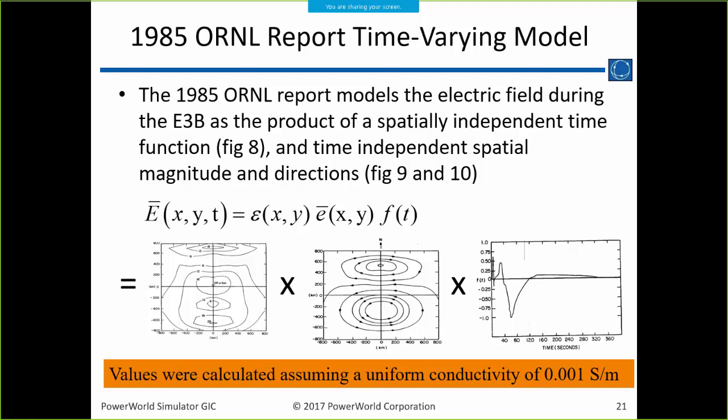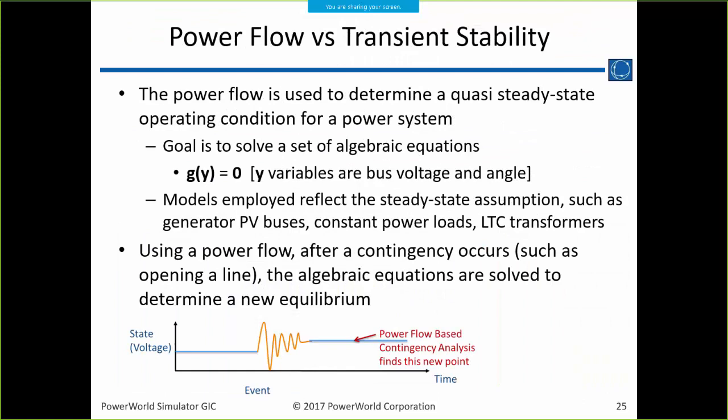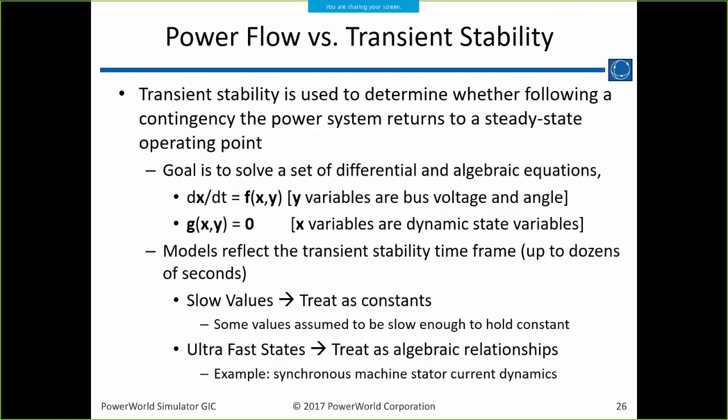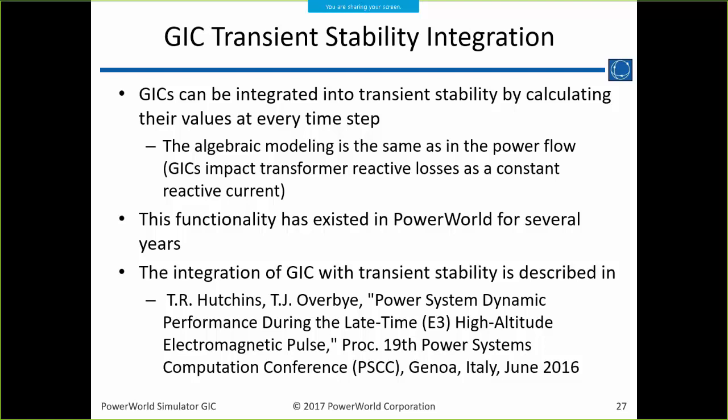Now we consider what the appropriate modeling tool is. For GMD, it's probably power flow. For EMP, it's very much time-varying — things are changing quickly. Looking at the waveform, a lot goes on in the first 80 seconds — that's a transient stability timeframe. So we model this in transient stability. We augmented transient stability to handle GIC calculations: transient stability is used to determine whether following a contingency the power system returns to steady state — you solve differential equations. At every time step, we calculate the GICs, which doesn't add much additional computation.